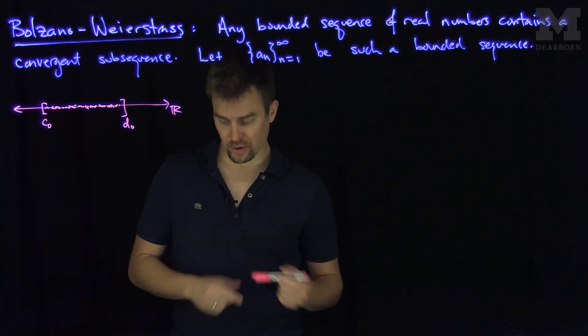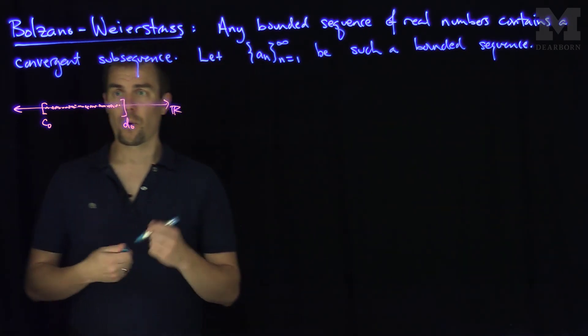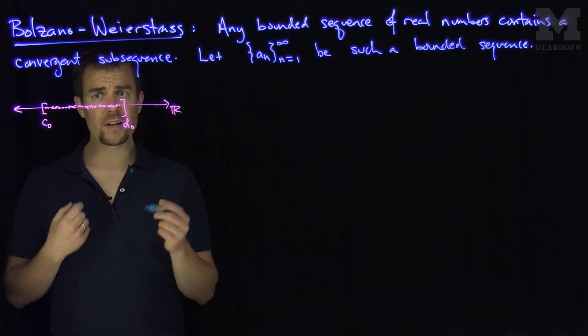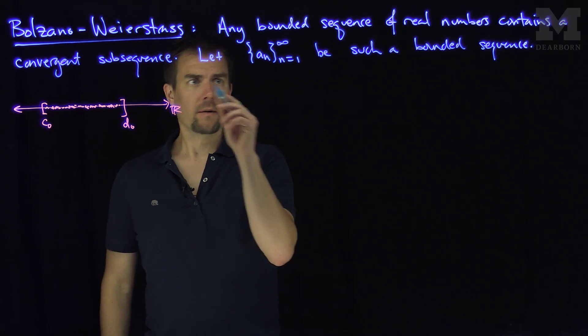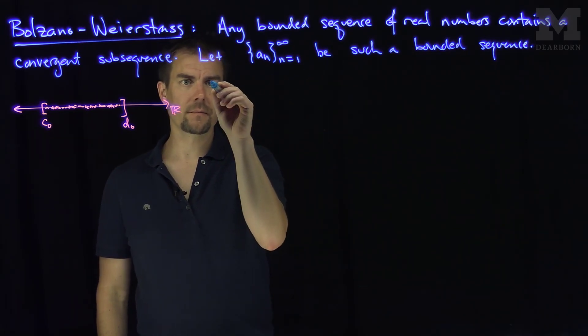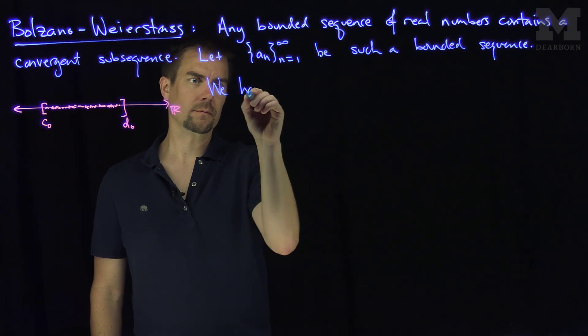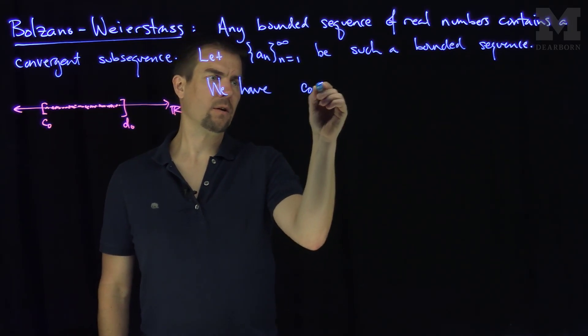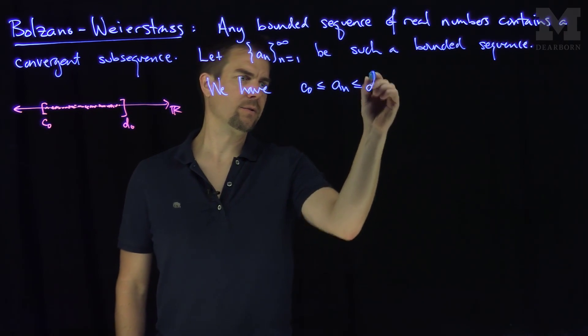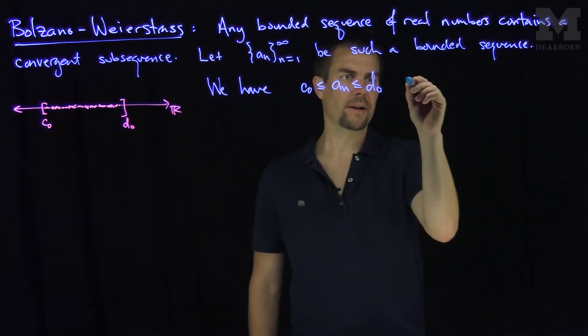So what we're going to do is we're going to build a nested collection of closed intervals. So, since the sequence is bounded, we have c0 less than or equal to an less than or equal to d0 for all n.